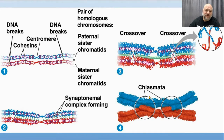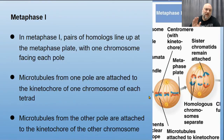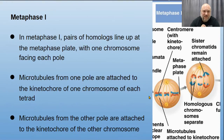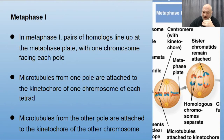In metaphase I, homologs stay paired up and line up at the metaphase plate — unlike mitosis, where only sister chromatids line up. Here we have essentially four copies: one chromosome with two sister chromatids paired with another chromosome with two sister chromatids. Spindle fibers attach from each side so we can start pulling them apart.